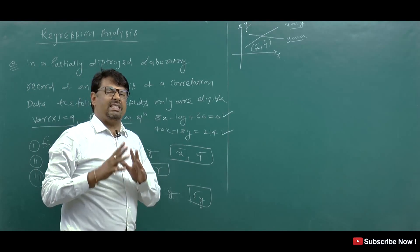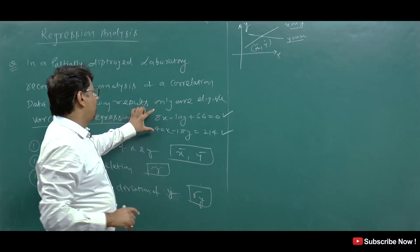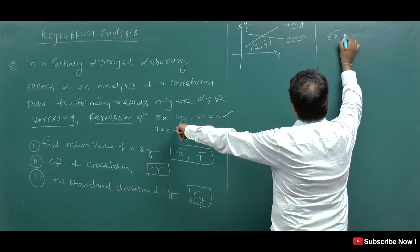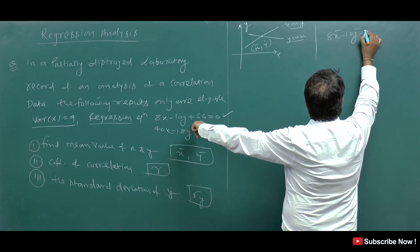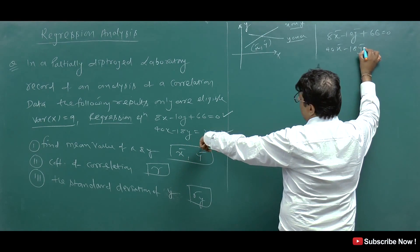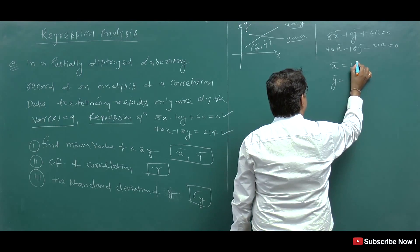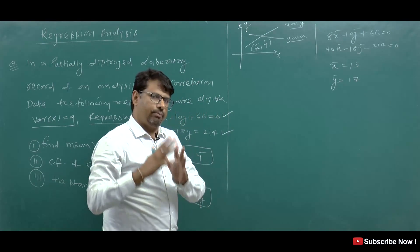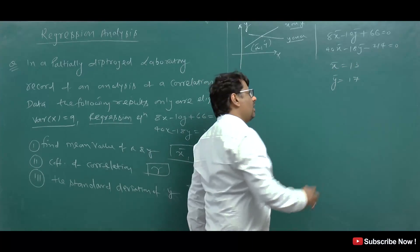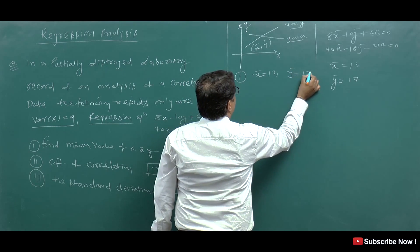I have told you that if you have the x-on-y and y-on-x equations, they will satisfy each other at the mean. So we take the two regression equations and solve them simultaneously. Here we get x̄ = 13 and ȳ = 17 when you solve. So our first answer is: x̄ = 13 and ȳ = 17.